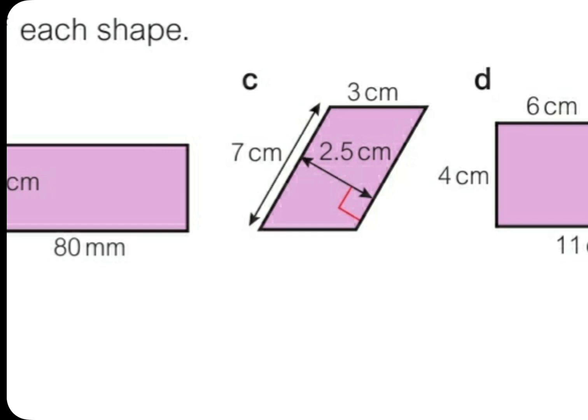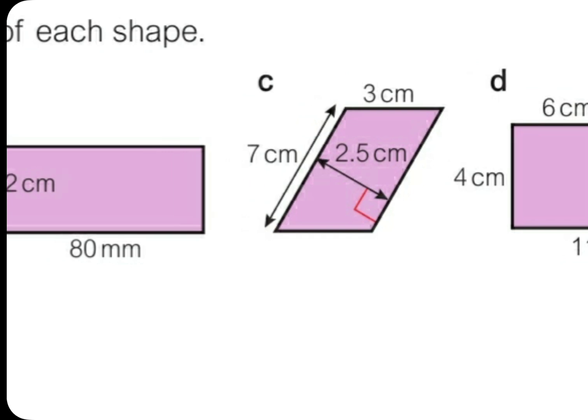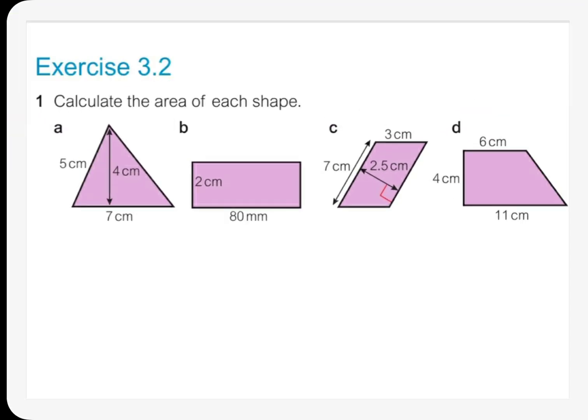The base and the height are always perpendicular to each other, so they have 90 degree angles between them. That's why we have to say that the 7 centimeter here is the base, because 2.5 centimeters is perpendicular to the base.